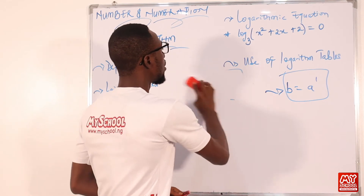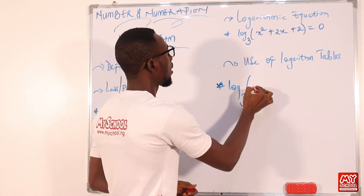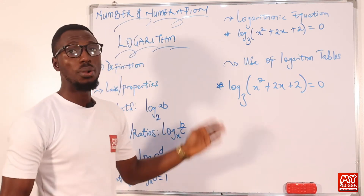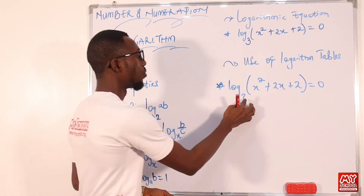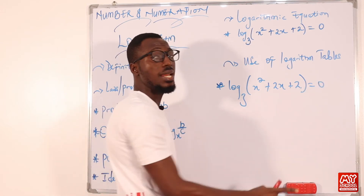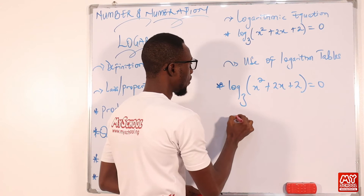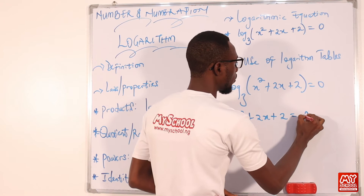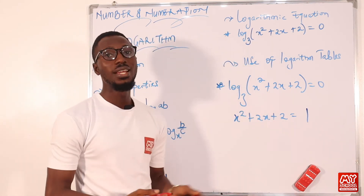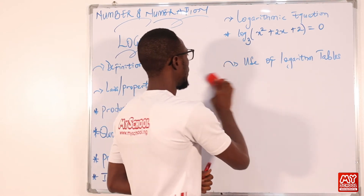Let's go into logarithmic equations. For example: log base 3 of (x² + 2x + 2) = 0. You can use one of the laws mentioned earlier. Send the base 3 to the right-hand side — the index is 0, and anything raised to power 0 is 1. So 3 raised to power 0 equals 1. Then collect like terms, send the 1 across, and factorize to get your answer.